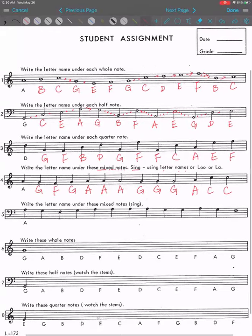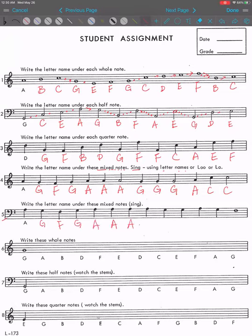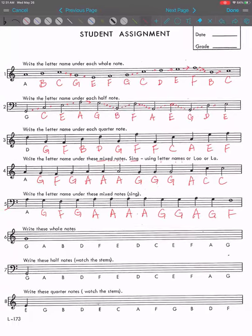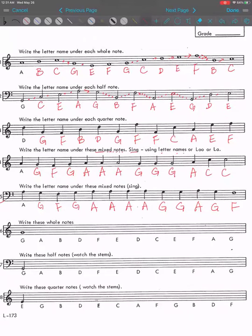Now next one, again, if you haven't written number five, write it before you check answer with me. It's going to be A, G, F, G, A, A, A, G, G, A, G, F. Number six. Finish before you check answer with me.